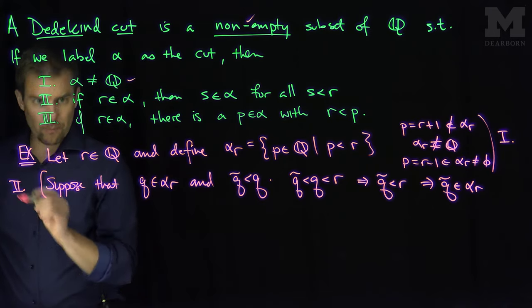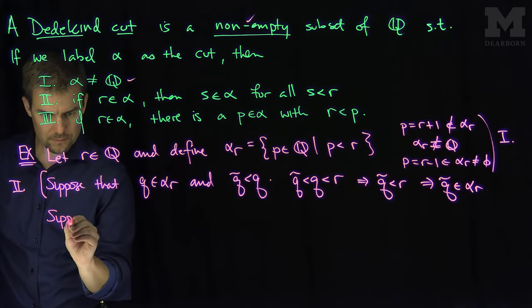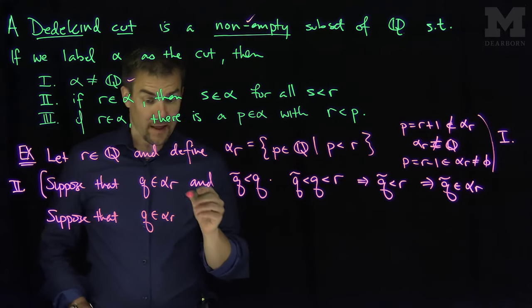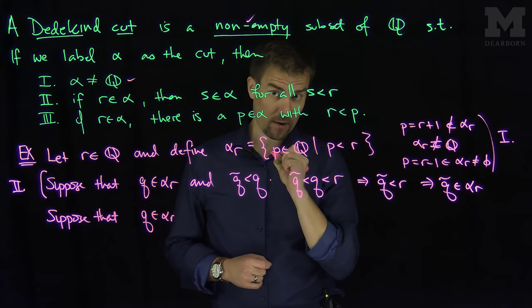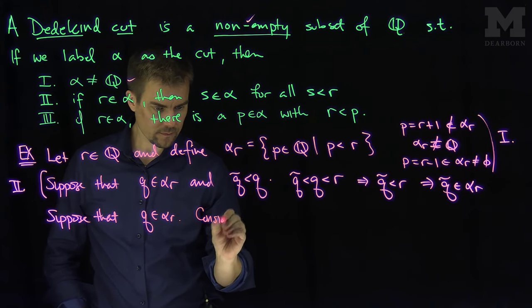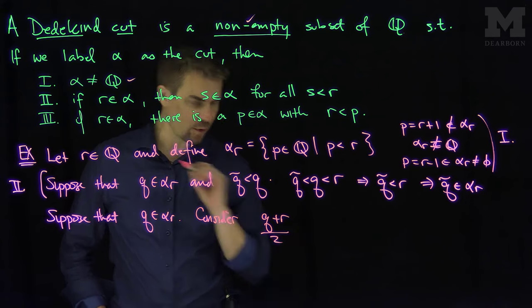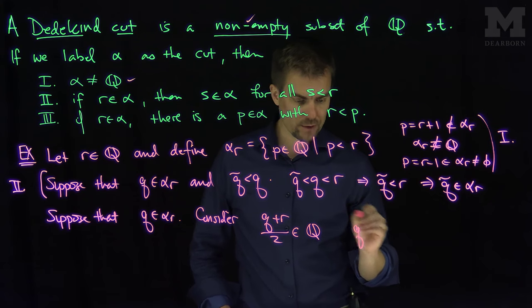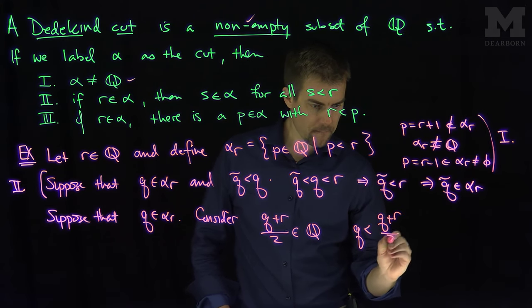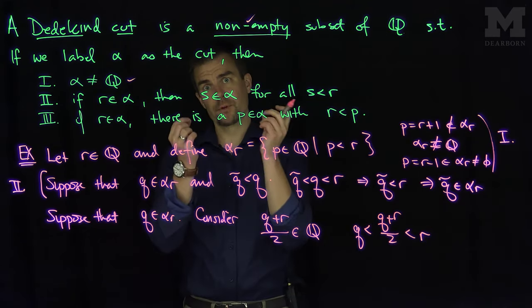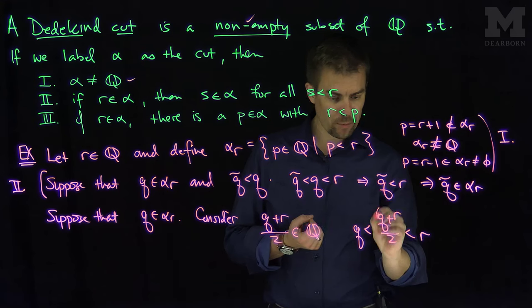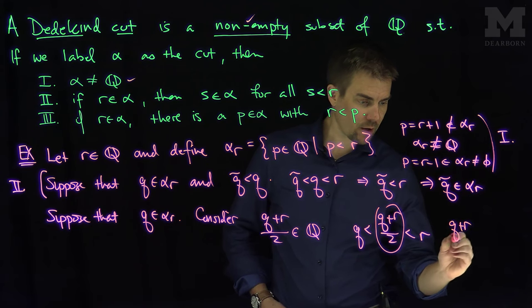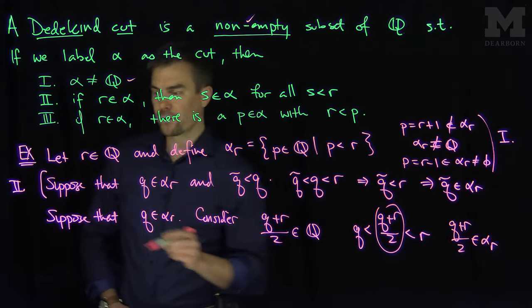Finally for property three, suppose that Q is in alpha R again. That tells me that Q is less than R. Consider Q plus R over two. Q plus R over two is a rational number, and we know that Q plus R over two is between Q and R because the midpoint of two points is always between the two of them. So Q plus R over two is greater than Q, it's a rational number, and it's less than R. This says that Q plus R over two is in the cut alpha R, and that proves property three.